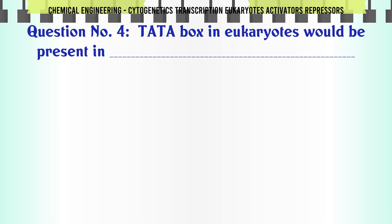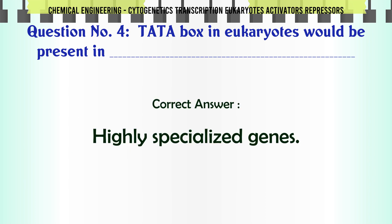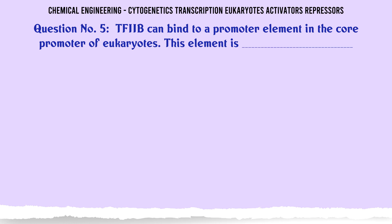TATA box in eukaryotes would be present in: A. Housekeeping genes. B. Developmentally regulated genes. C. Cytoskeletal genes like that for actin. D. Highly specialized genes. The correct answer is Highly specialized genes.